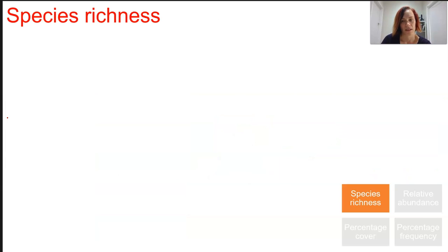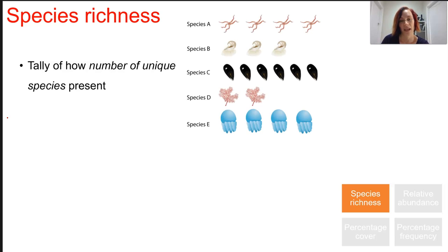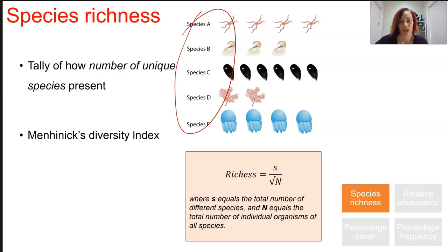If we talk about species richness, this is a tally of how many unique species are present. So it's a real simple count. If we have a look at this community here, our first instinct is to go and count how many of each species there are. But species richness just says the species richness of this community is five. There are five unique species here. So the larger the sample, the more species you'd expect to find. We use Mennonix diversity index to calculate that, and it takes on board the number of different species and the total number of organisms present.